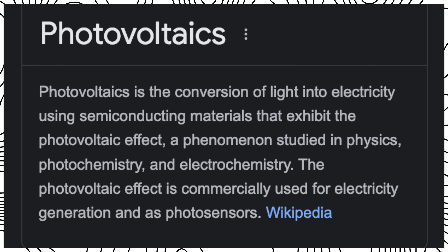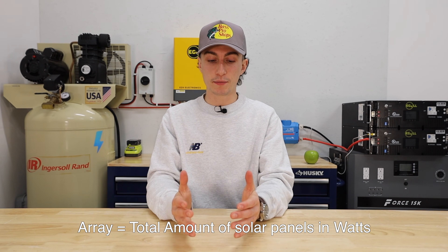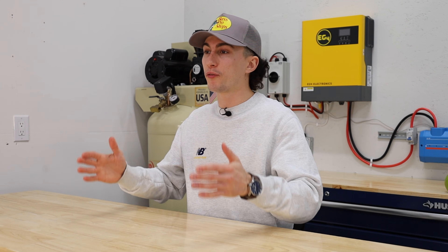You're also going to hear the word PV, which just means solar. Sometimes different inverters or portable power stations will have their solar input labeled as a PV input. PV is basically the process of how a solar panel takes sun energy and turns it into direct current. When you hear PV or PV input, PV equals solar. You'll also probably hear the word array, which is basically your total amount of solar panels. So if you have four 100-watt solar panels, your array size is 400 watts.